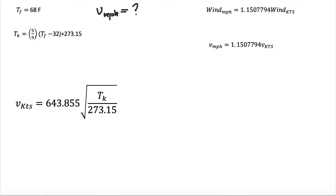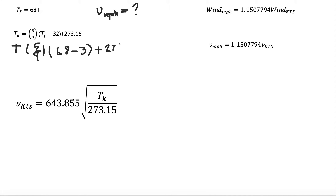Because temperature is 68 Fahrenheit, we are going to find the temperature in Kelvin. We input 68 Fahrenheit into the conversion formula: Tk = (5/9) × (68 − 32) + 273.15. All these units are going to be in Kelvin.